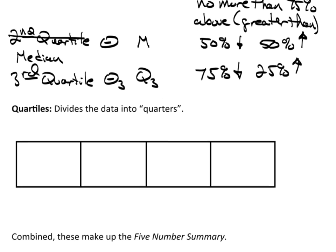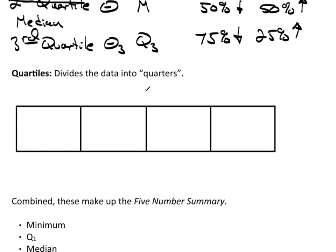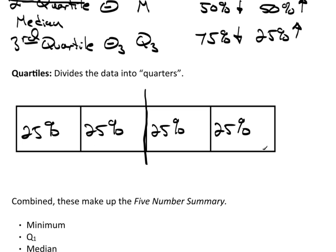The idea behind quartiles is that they divide the data into quarters. Right down the middle I'll have 25 percent of the data here, 25 percent here, 25 percent here, and 25 percent here — that makes up 100 percent. So Q1 sits at the point giving no more than 25 percent below and no more than 75 percent above, theta gives 50 percent below and 50 above, then Q3. If dealing with sample statistics, we'd use Q1, M, and Q3.